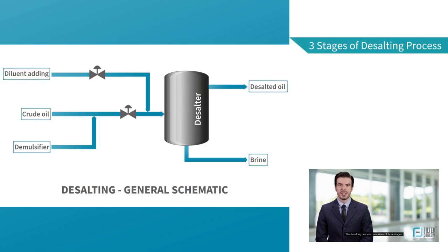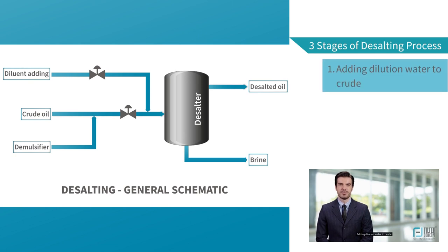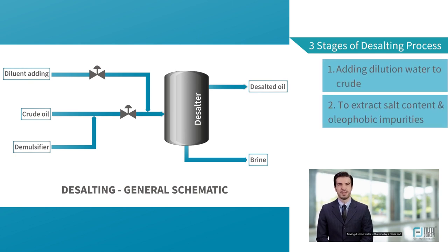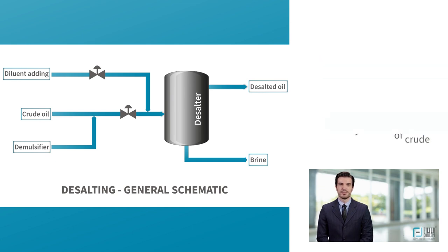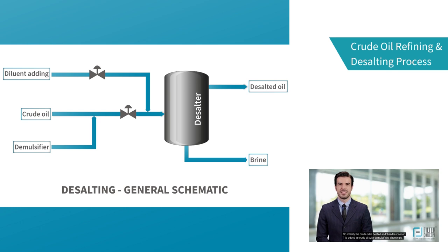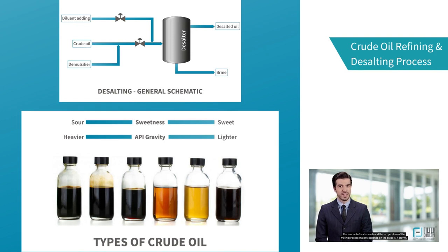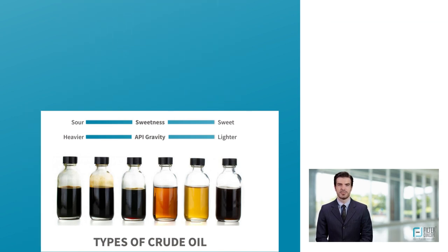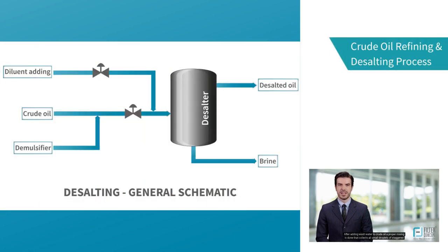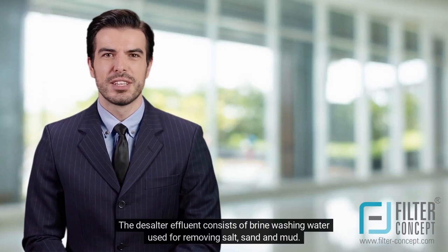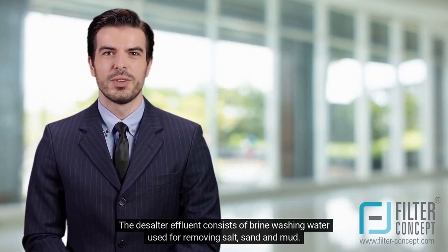The desalting process comprises three stages: adding dilution water to crude, mixing dilution water with crude using a mixer, and dehydration of crude in a settling tank to separate crude, sediment, and water. Initially, the crude oil is heated and fresh water is added with demulsifying chemicals. The amount of water wash and the temperature of the mixing process mainly depend on the crude API gravity. After adding wash water, proper mixing collects all small droplets of staggered brine into bigger drops. The collected water or brine is drained into the effluent system, and clean desalted oil is sent for further processing. The desalter effluent consists of brine washing water used for removing salt, sand, and mud.